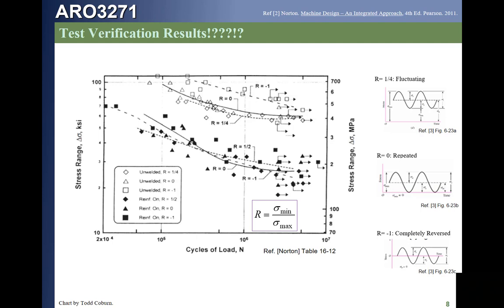This leads researchers to conclude that mean stress does not affect the fatigue strength of a welded part in the same way it does for a non-welded part. In fact, mean stress hardly affects fatigue life for a welded part, while it does for a non-welded part. This is why we only apply the stress concentration factor to the alternating component, and why Method 2 completely ignores mean stress, using only the alternating part of the stress to characterize fatigue strength.